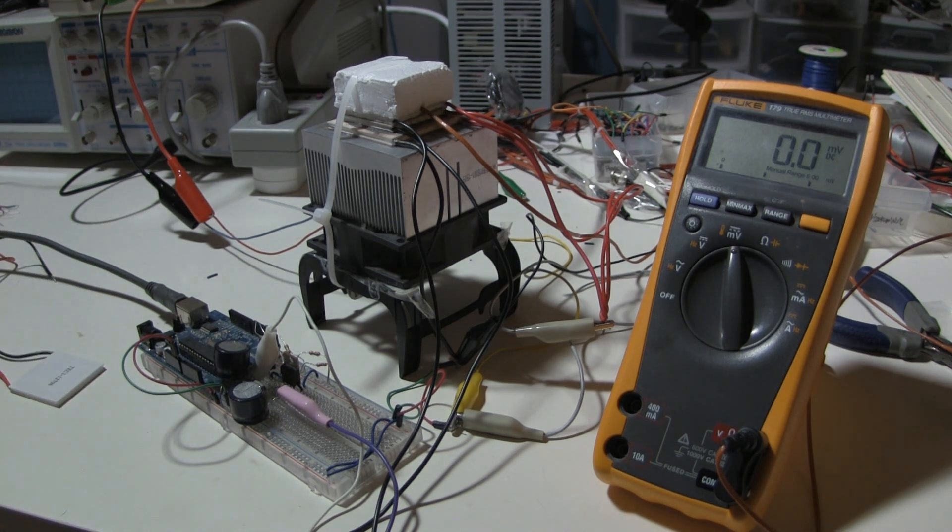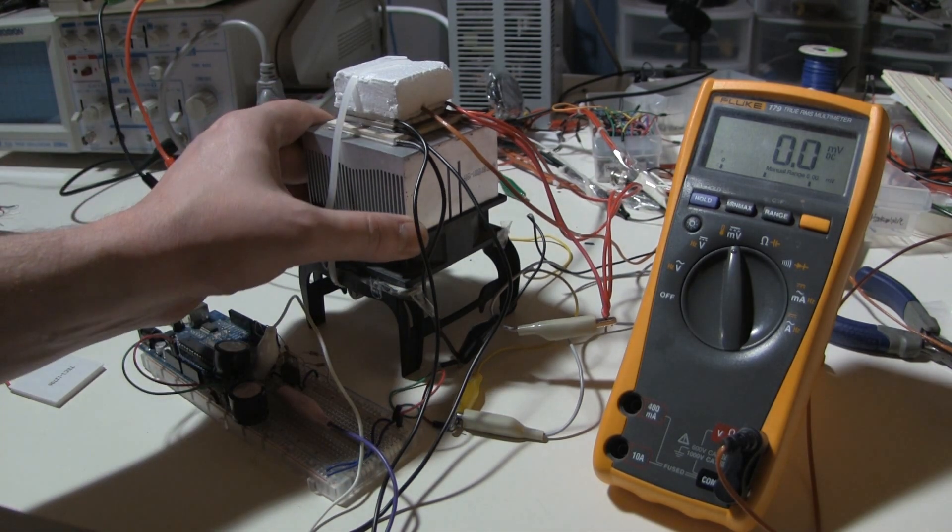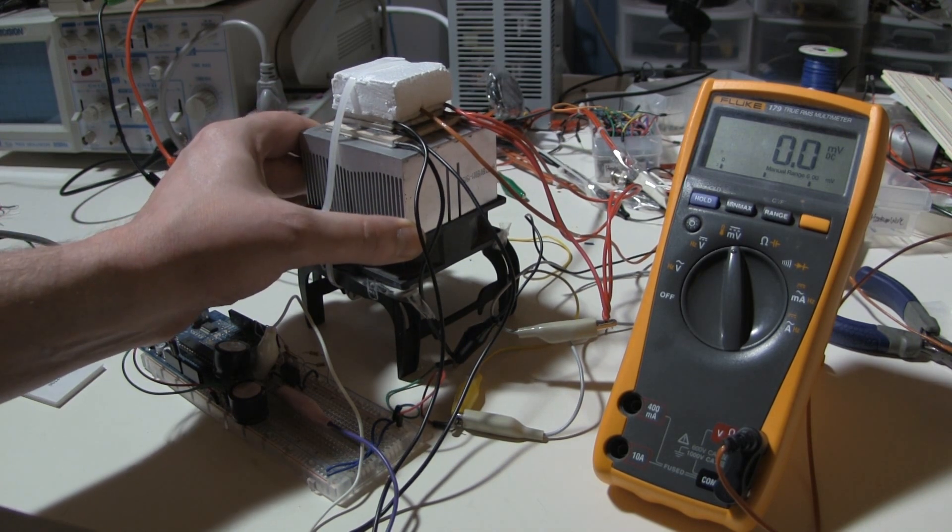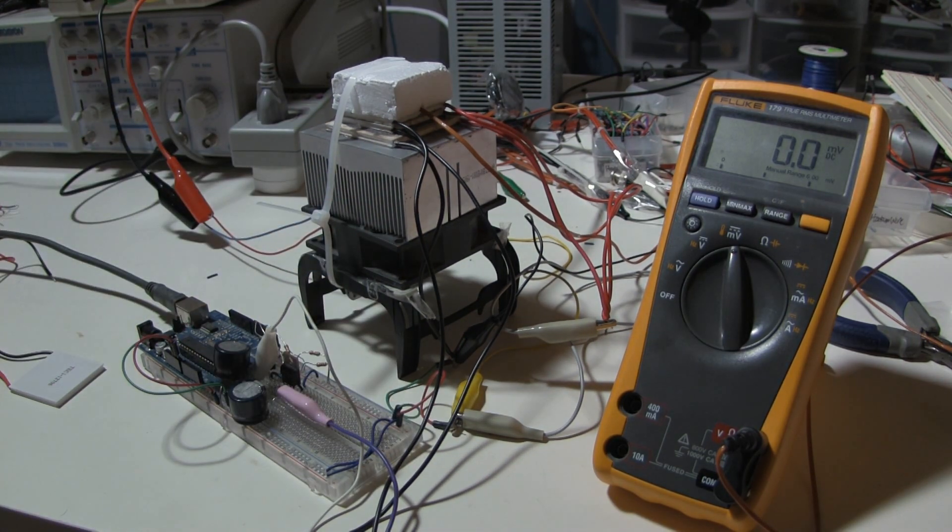What I'm ultimately trying to do here is to create a cloud chamber. A cloud chamber is a very primitive particle detector. What you need for this sort of DIY home cloud chamber is a very strong cold sink, because you need to create temperatures that are around negative 26 degrees Fahrenheit.